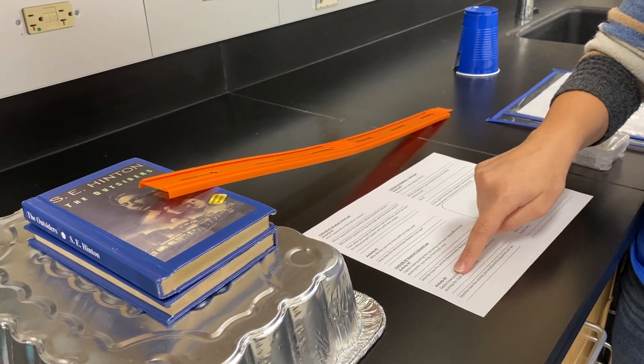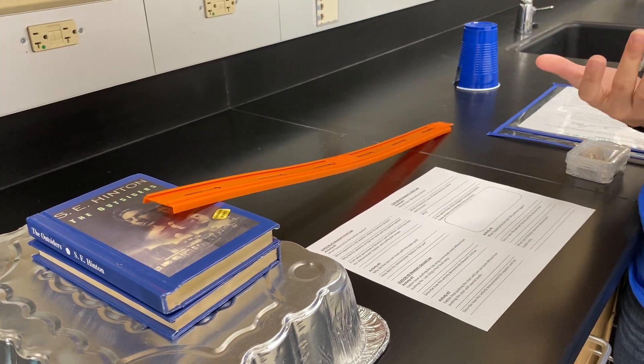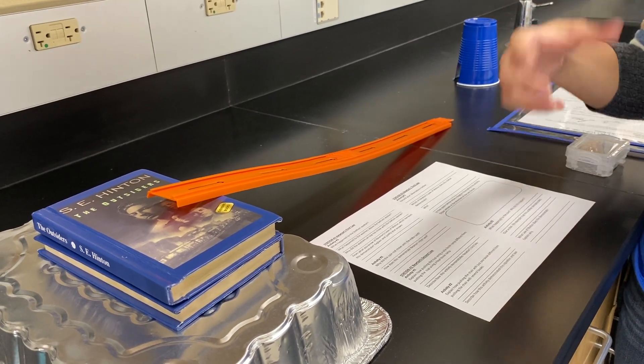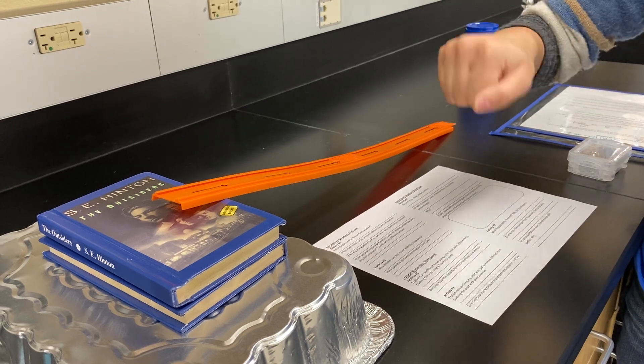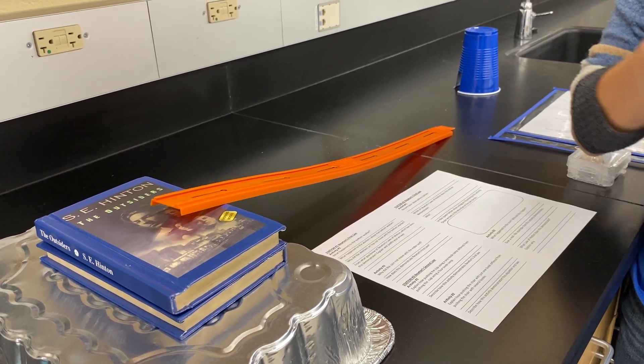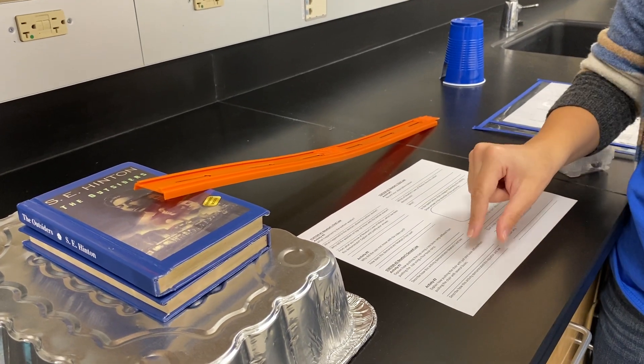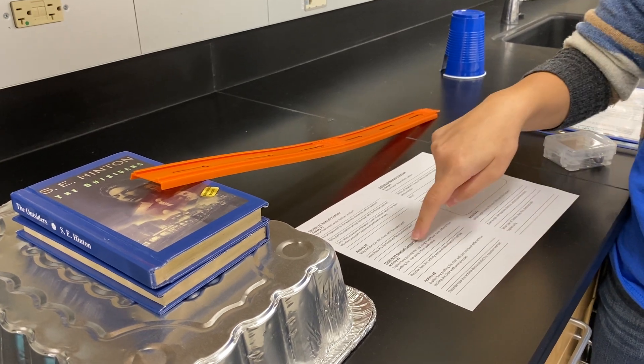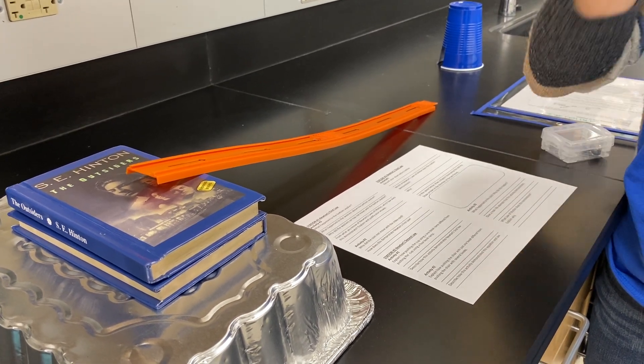Now, for this part right here, for activity two, what you're going to have to do is you're going to have to imagine how pushing a chair with more books on it is going to affect the amount of force that we have to use. And that's what you're going to answer right here. So that's your Newton's second law station. Thank you.